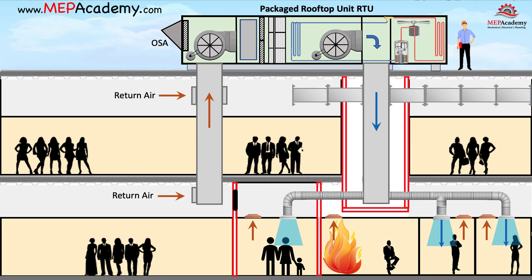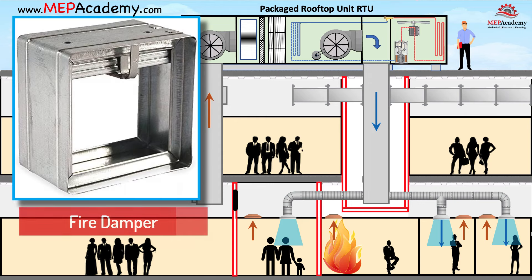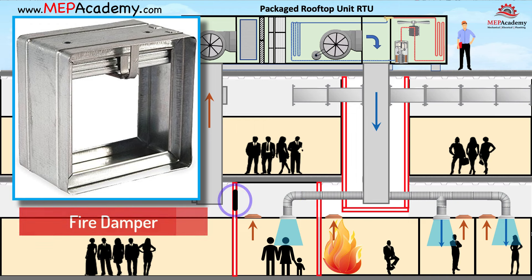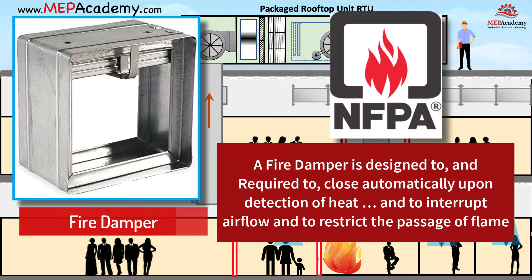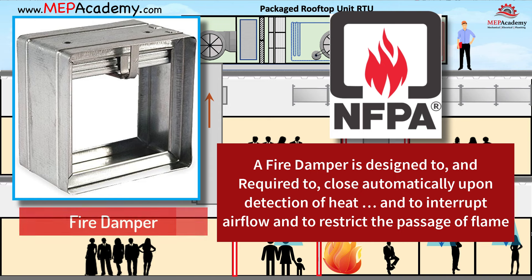Since we have penetrated the fire-rated wall, we'll need to maintain the fire rating by installing a rated fire damper at the supply and return air wall penetration. Here is the definition of a fire damper according to the NFPA, National Fire Protection Association: a fire damper is designed to and required to close automatically upon detection of heat, such as a fusible link or heat detector, and to interrupt airflow and to restrict the passage of flame.